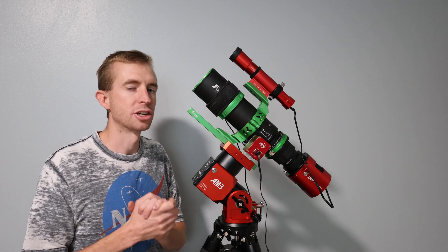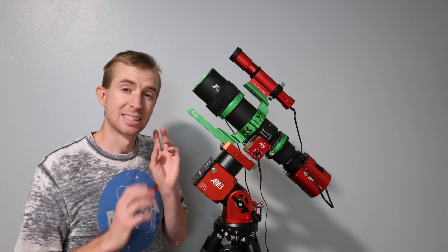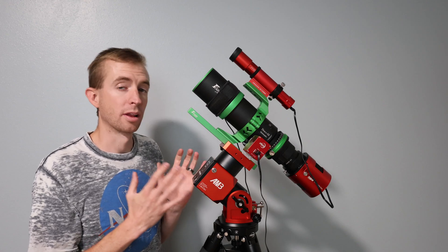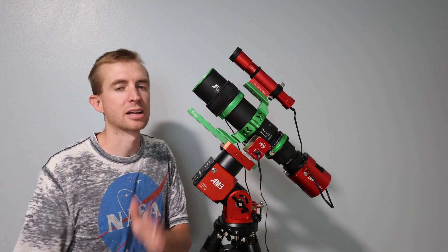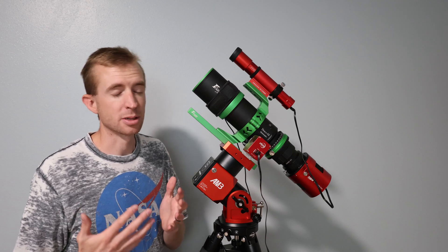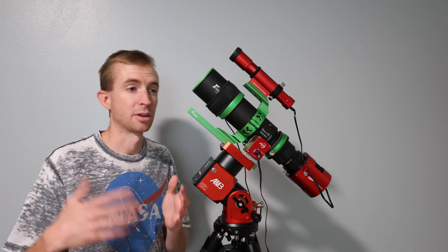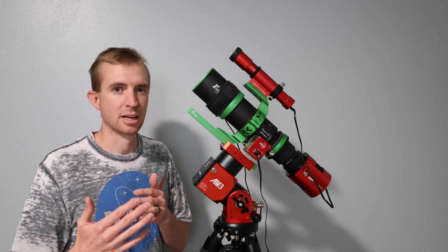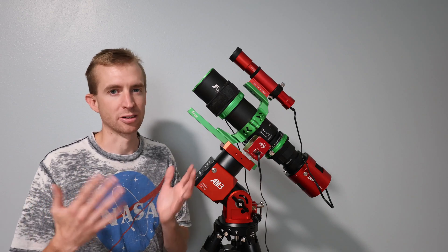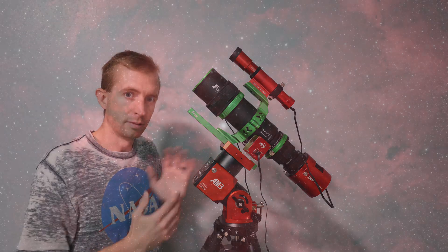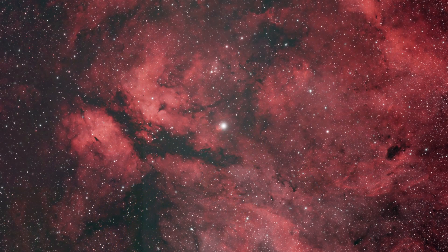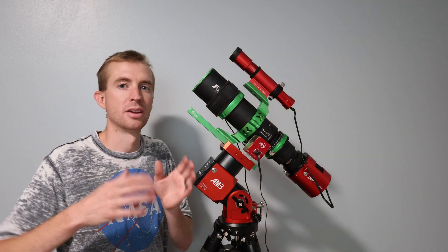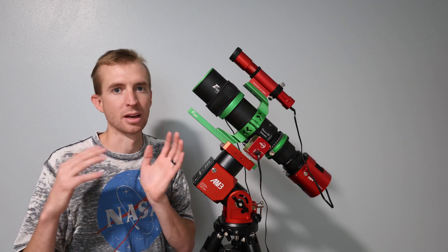But there's one other thing I want to mention about the guiding: it's the consistency. The guiding consistency is really what I love with this mount. So with my Celestron AVX or CGX mount, sometimes I'll get like 0.5 arc seconds, sometimes it'll be like 1.20 arc seconds. It kind of fluctuates night in and night out, and that depends on a lot of factors.